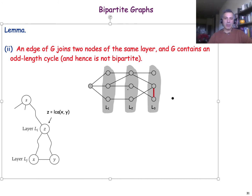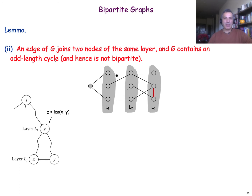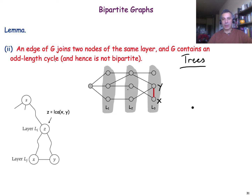The second case is more interesting: if we have two nodes in the same layer connected by an edge, the graph is not bipartite. We will show that such cases produce an odd-length cycle, and since bipartite graphs cannot have such cycles, the conclusion follows. Without loss of generality, let x and y be the two nodes connected by an edge in the same layer. Recall that in a tree, all nodes between a given node and the root are its ancestors, and any two nodes have a lowest common ancestor.